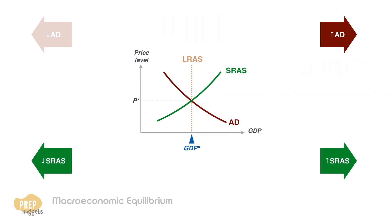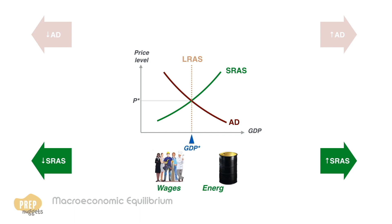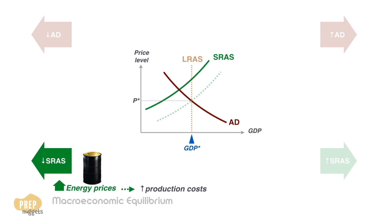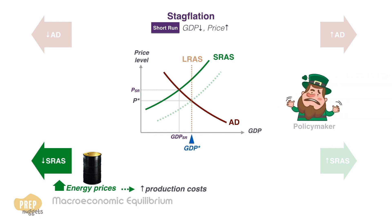Our third and fourth cases have to do with shifts in short-run aggregate supply, which are often due to changes in input prices like wages or energy prices. For example, a sudden increase in energy prices increases the cost of production for many firms, pushing the SRAS curve to the left. The result is a lower GDP at a higher overall price level for goods and services in the short run. This combination of declining economic output and higher prices is termed stagflation, which can be a policymakers' nightmare.